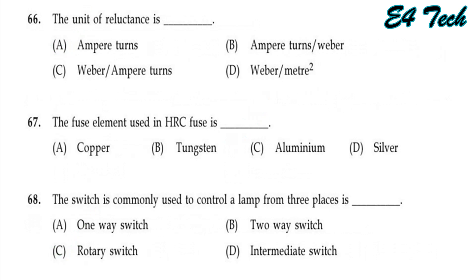The unit of reluctance: reluctance S is equal to l divided by mu times A. The unit of reluctance is ampere turns per Weber. Option B.